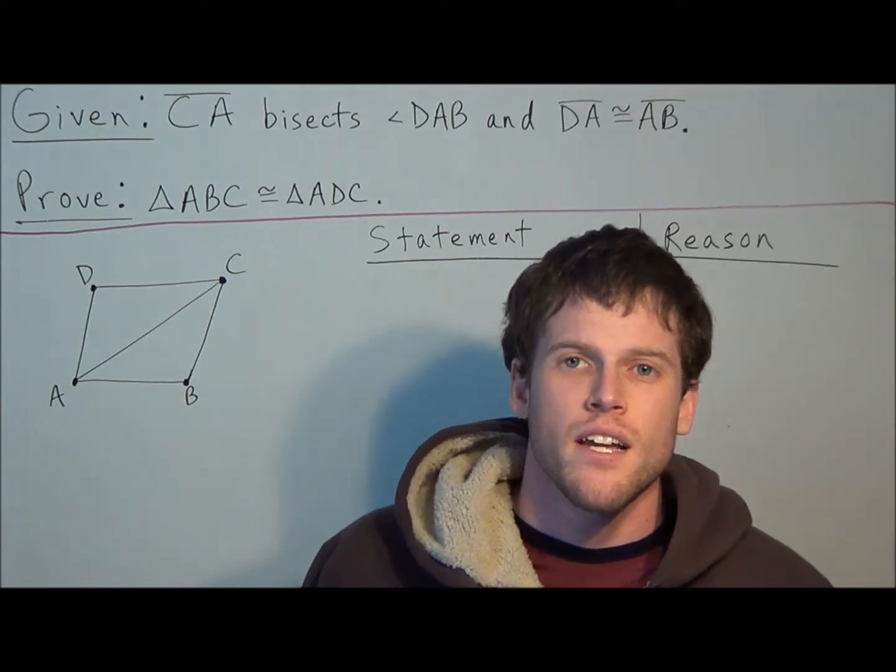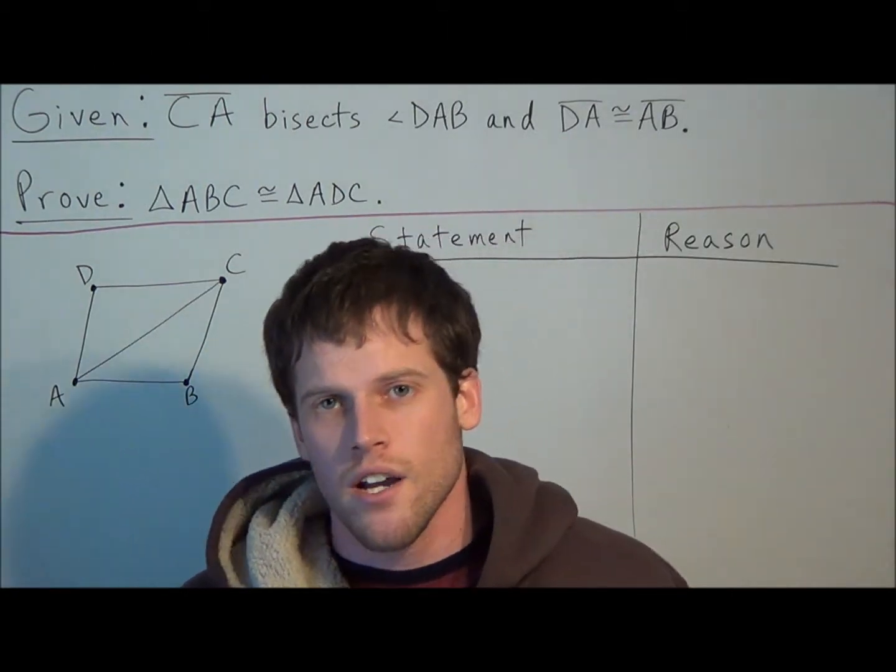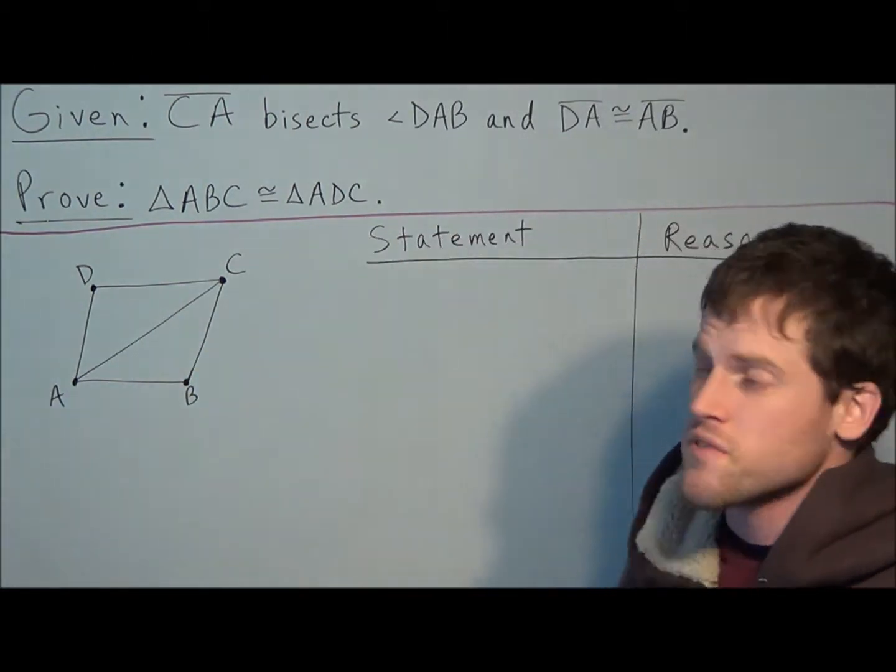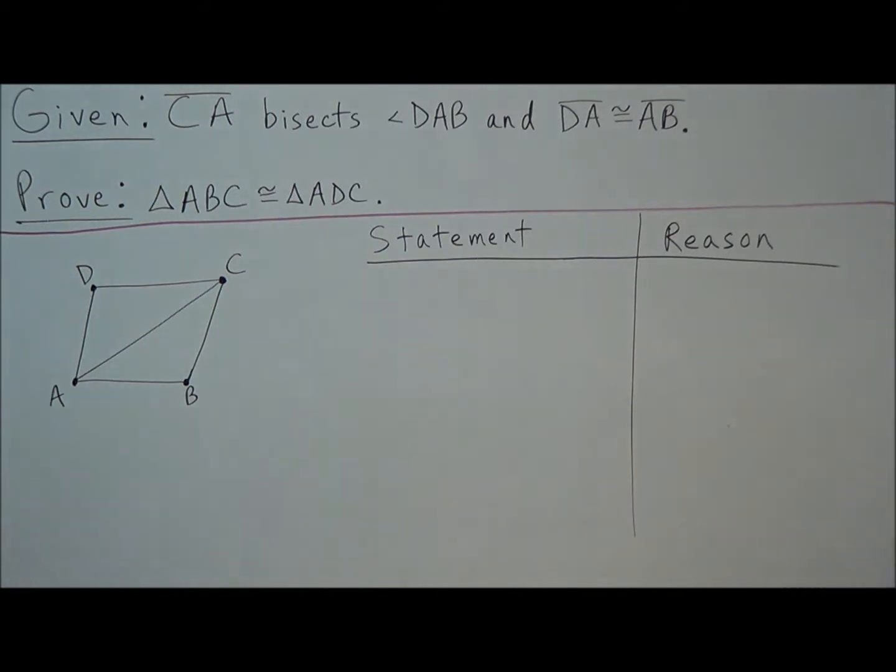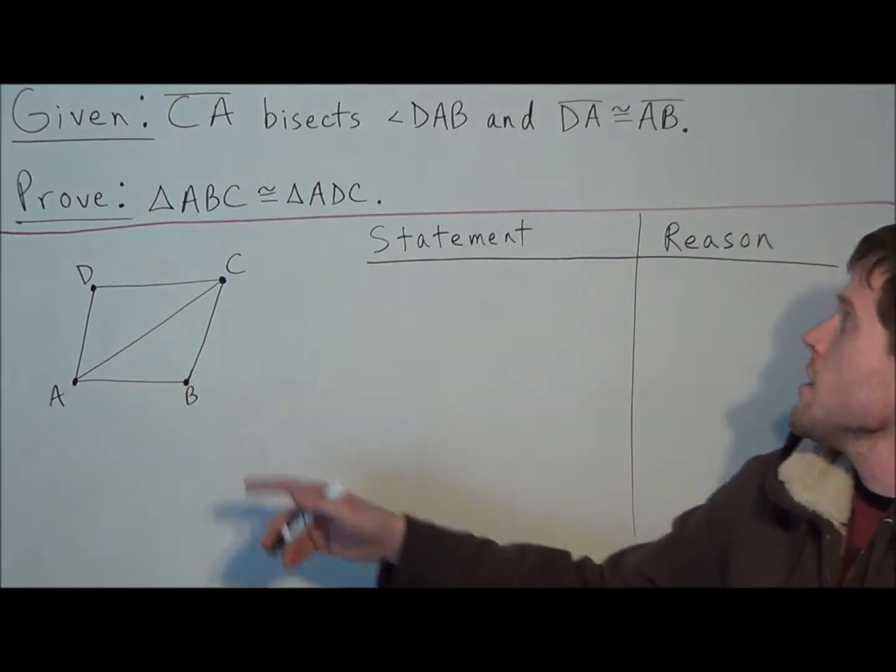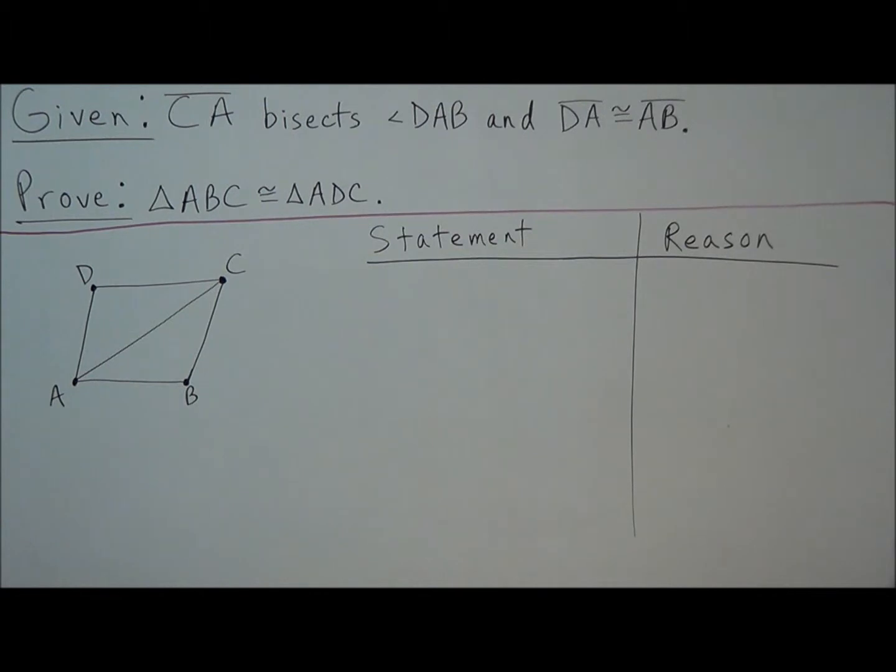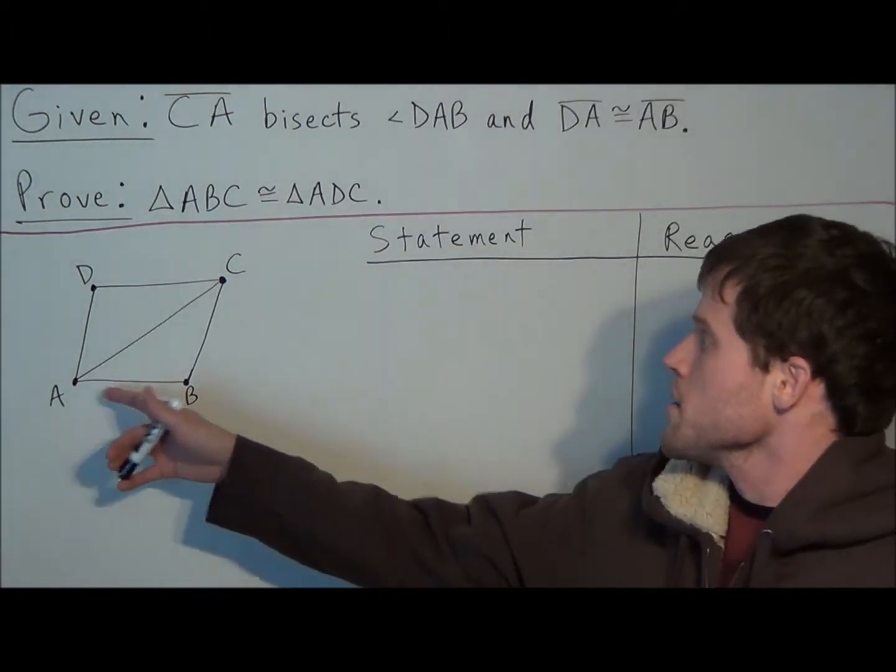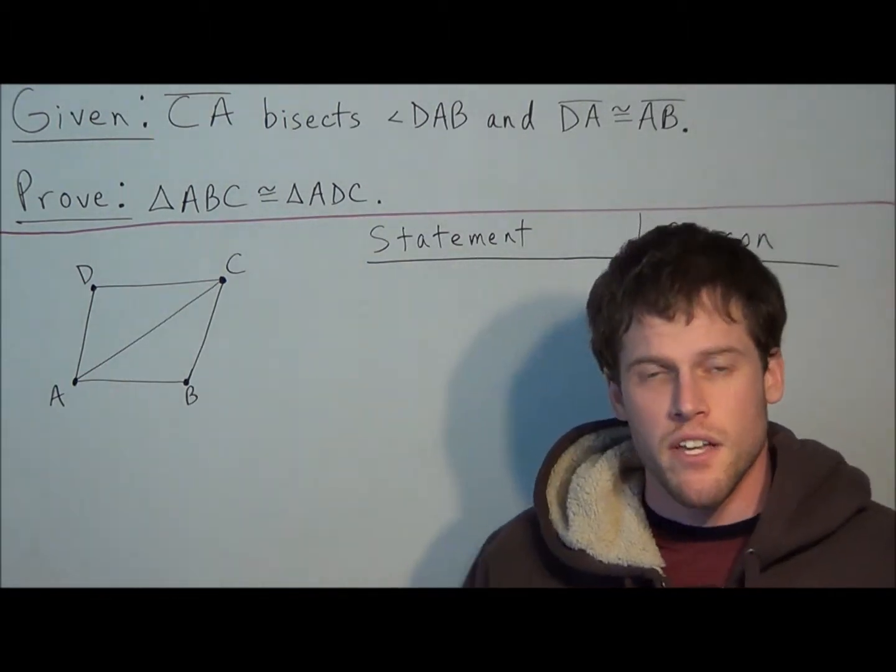Hi, my name is Mr. D and today I want to take a look at using the side angle side postulate in triangle proofs. So we have given CA bisects angle DAB and DA is congruent to AB. We want to prove that triangle ABC is congruent to triangle ADC.